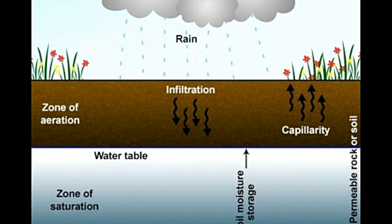The formation and location of the zone of aeration largely depends on the topography, geology, climate, and drainage. These factors decide the depth of the water table underneath the surface. The zone of aeration is typically quite thick in topographically high areas, highly permeable formations, and arid regions. The porosity of the rocks in the zone of aeration is a major deciding factor of the groundwater recharging capability.